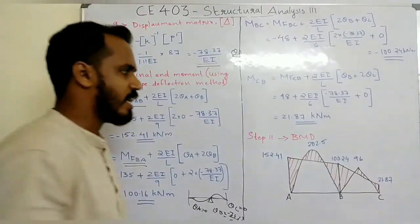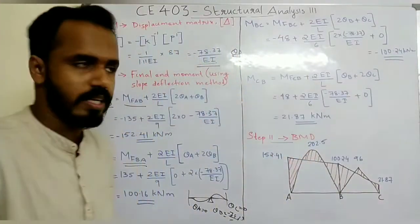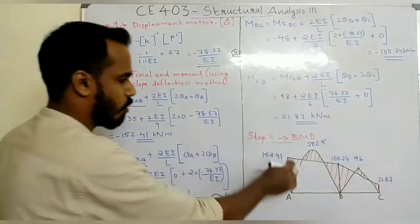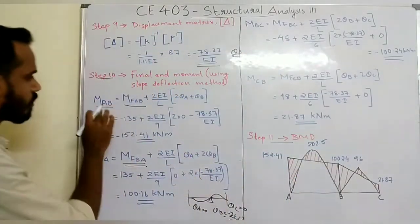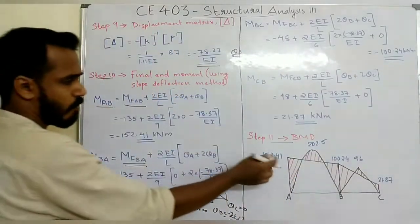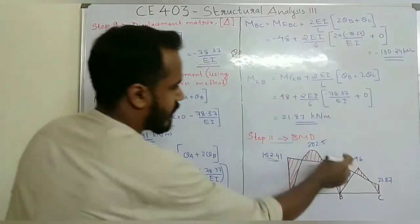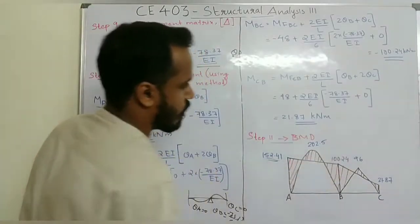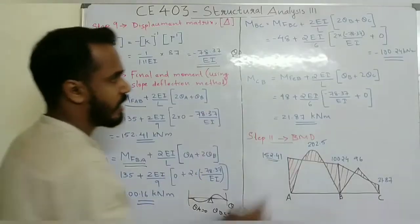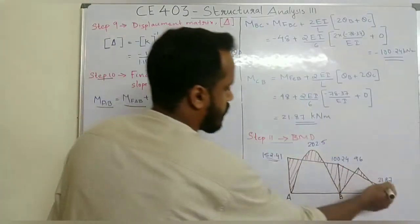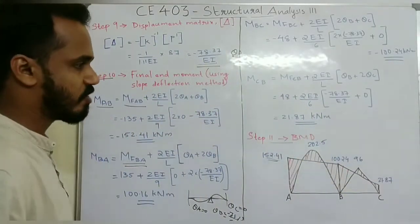From this step we can draw the bending moment diagram. The final end moments are: MAB = 152.41 kNm, MBA = 100.24 kNm, and MCB = 21.87 kNm.